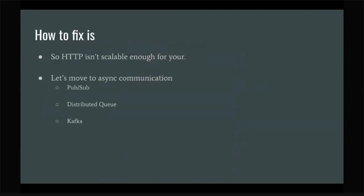This is where you start to see async communication solutions, and you have tons of them. You can use Redis PubSub, RabbitMQ, or Kafka. Almost any cloud provider has some kind of distributed queue, sometimes even more than one. I personally use AWS SQS, which is a distributed queue, and I really like this solution. You just need to pick the right tool for you.